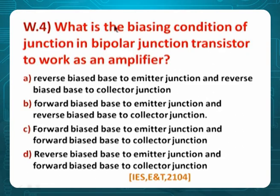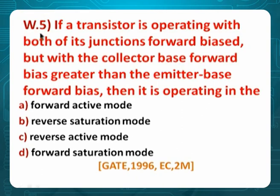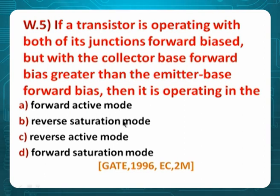Problem 4: What is the biasing condition of junctions in a bipolar transistor to work as an amplifier? Already studied — input should be forward, output should be reverse. So we need forward input and reverse output. Option is B.